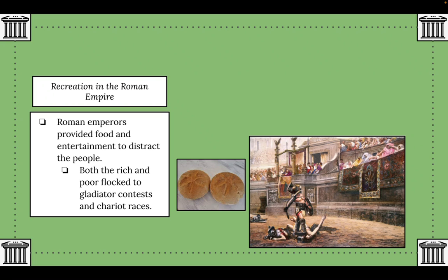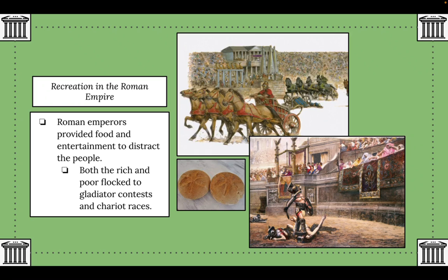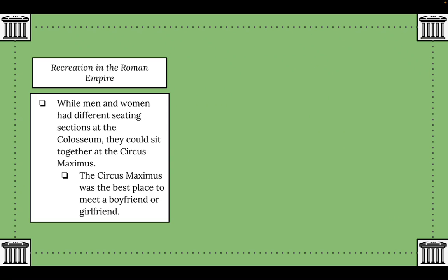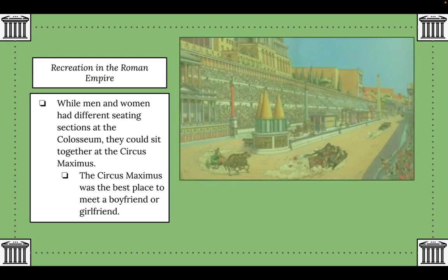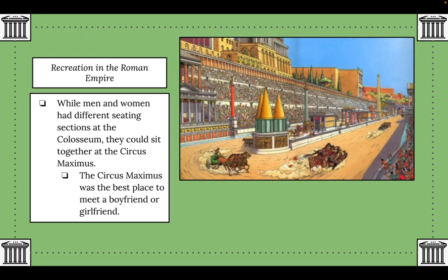Both men and women were gladiators, usually slaves or prisoners of war, though some won or bought their freedom. Crowds shouted as gladiators fought each other and wild animals to the death, and many thousands died for the entertainment of spectators. The other popular attraction was chariot racing. A favorite venue was the Circus Maximus, a huge racetrack accommodating 200,000 spectators. Unlike the Colosseum where men and women sat separately, at the Circus Maximus they could sit together — making it the best place to meet a boyfriend or girlfriend.